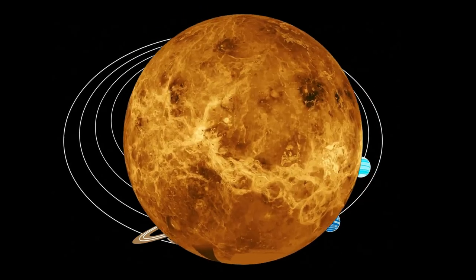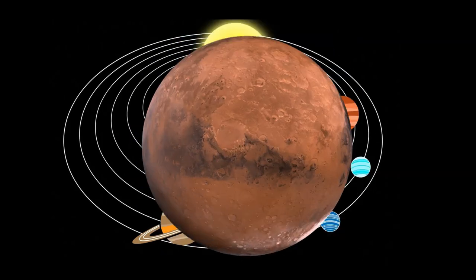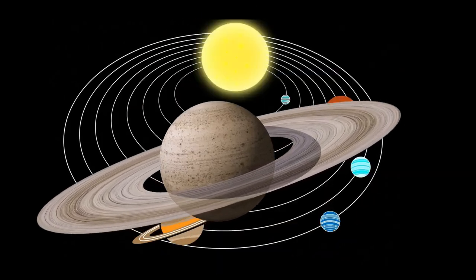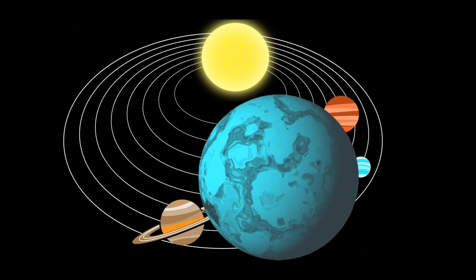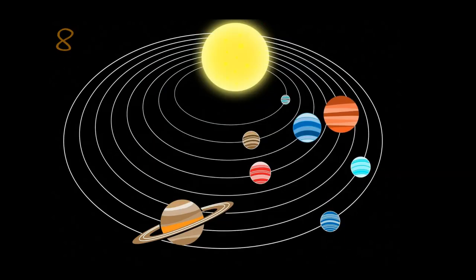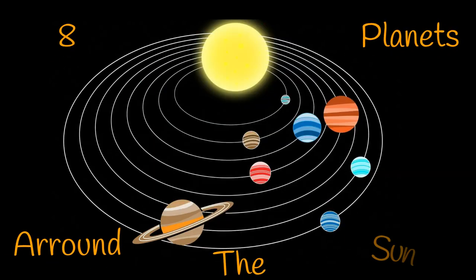Mercury, Venus, Earth, Mars, Jupiter, Saturn, Uranus, Neptune. Eight planets around the Sun.